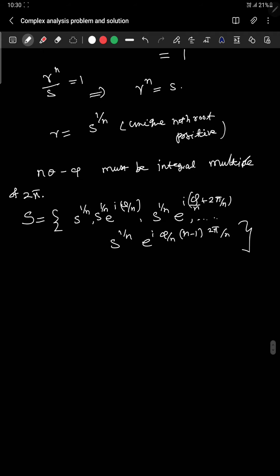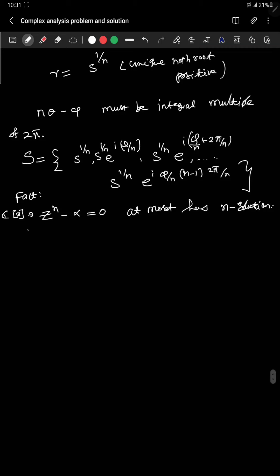And from a little bit of field theory background, maybe algebra background, it says that this polynomial z^n - α = 0 at most has n solutions. This result is coming from algebra. This belongs to complex of x. And this is saying that there are at most n solutions, so this implies we found exactly all solutions.